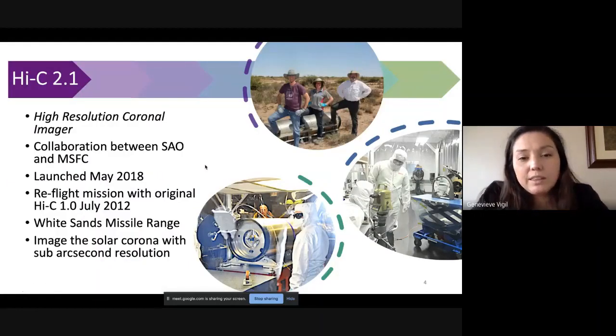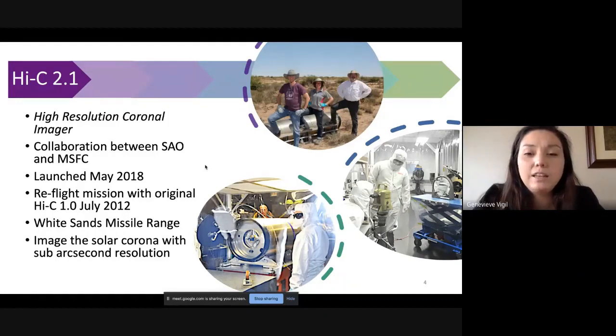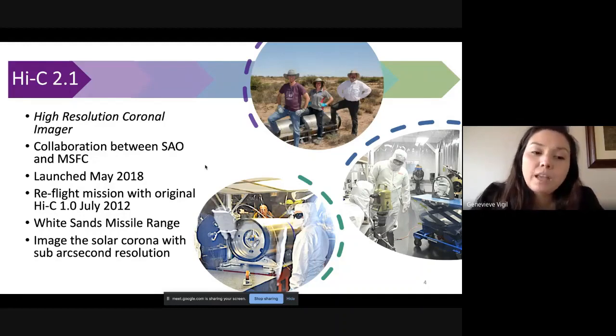To start off, I'll talk about Hi-C 2.1, which is the high resolution coronal imager. This is a collaboration between the Harvard Smithsonian Astrophysical Observatory and NASA Marshall Space Flight Center. This is the second successful launch of this instrument. The first instrument was launched in 2012. Since then, we recoded some of the optics and launched it again in May 2018 from White Sands Missile Range.